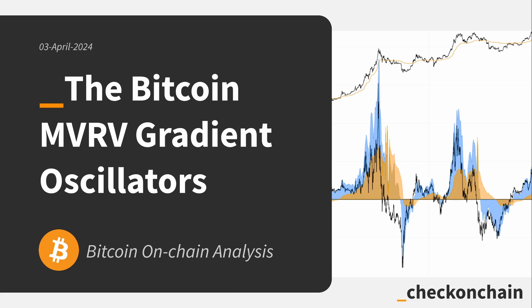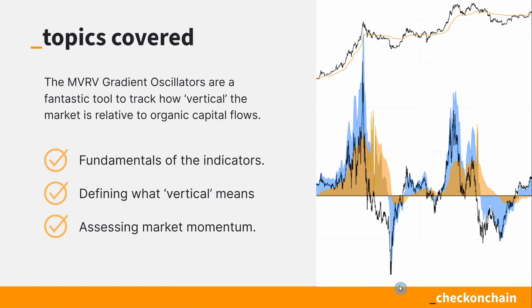We'll touch on this in more detail. What are these tools and why did I create them? My logic was that if we look at a parabola — using the 2017 bull market, which you can see up here — it got increasingly vertical. And the realized price here in orange also started to get increasingly vertical. So the argument is: if we measure how vertical price is over a 30, 60, 90, or 360-day period, we would be able to model out that parabola.